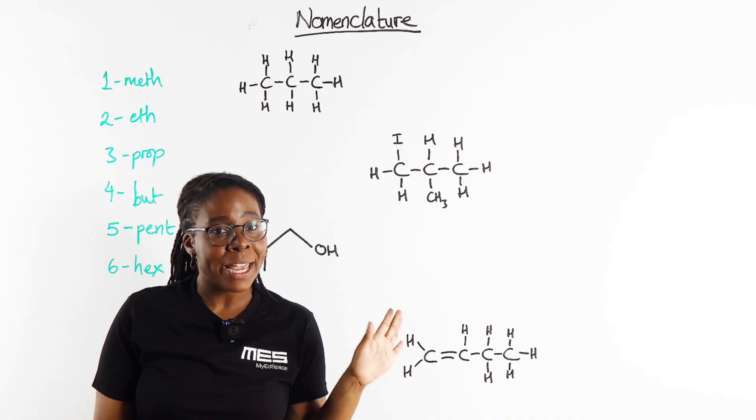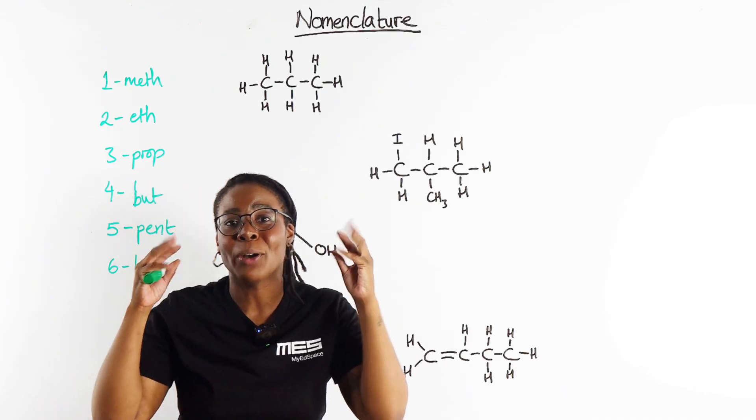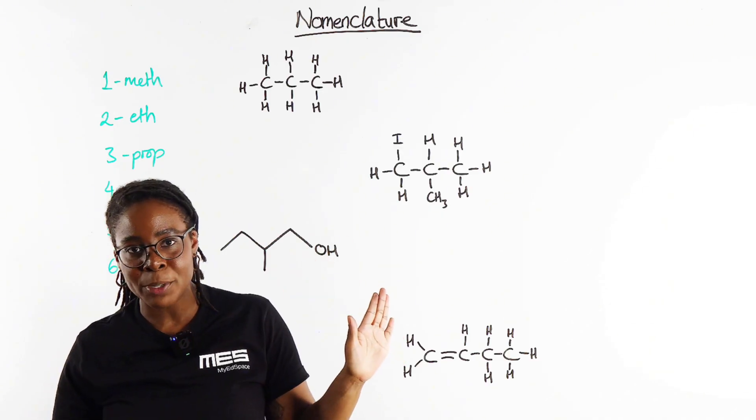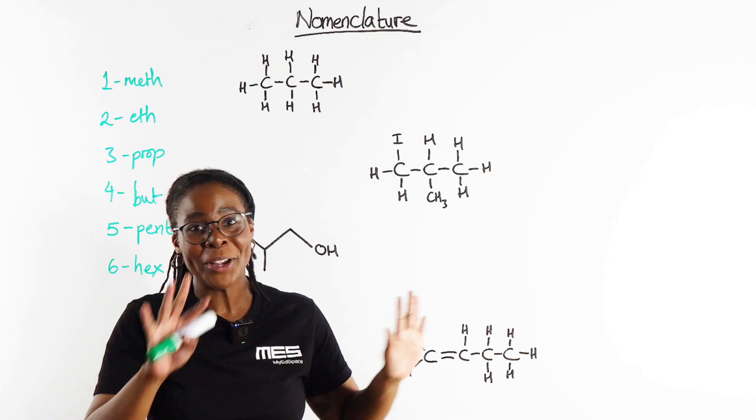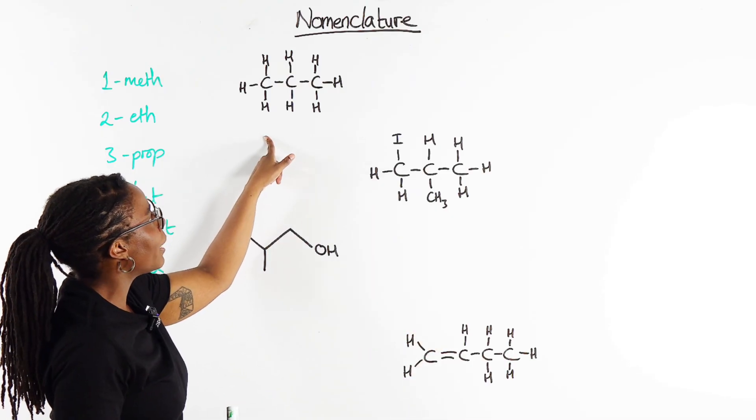Once we've got that, whenever you are naming your organic compounds I would strongly recommend do not try and build the whole name in your head from scratch. Immediately go piece by piece, start with the longest carbon chain, figure out what else is going on on there, and then do your numbering last.